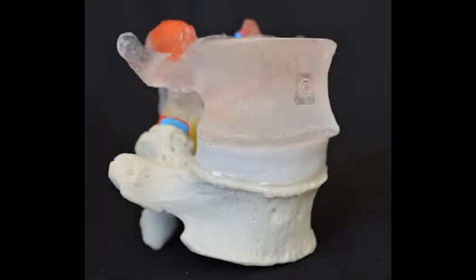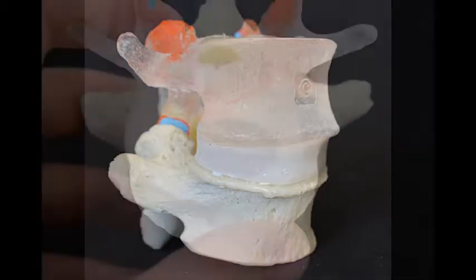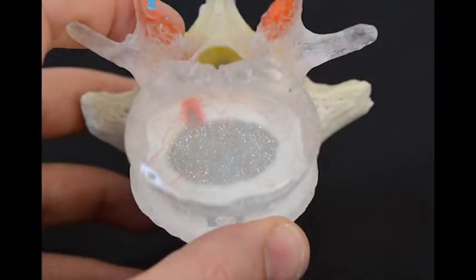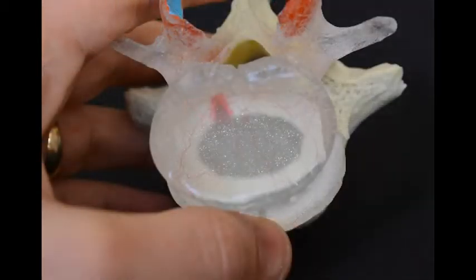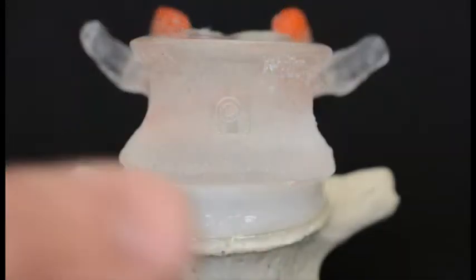Triple D introduces the first hypermobility lumbar model constructed with a two-part disc and a reflective three-dimensional nucleus pulposus.